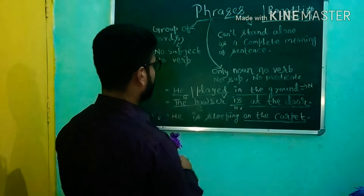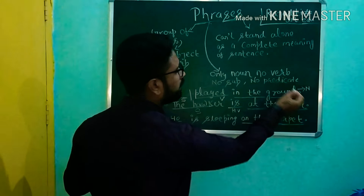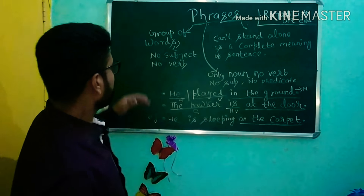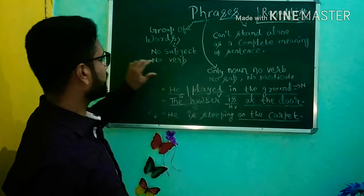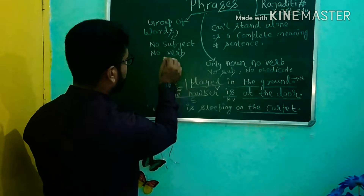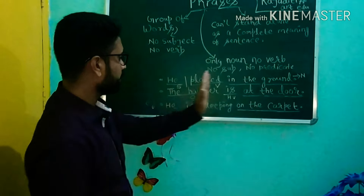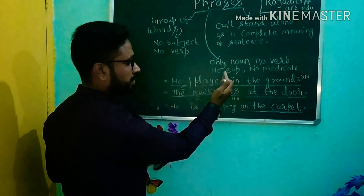Let's clarify by going through some examples about phrases. 'He played in the ground.' Here, 'he' is the subject, 'played' is the verb, and 'in the ground' is the phrase. As discussed earlier, a group of words with no subject and no verb will be a phrase. If we separate 'he' and 'played' from this sentence, 'in the ground' will not have any meaning, so 'in the ground' is the phrase for this sentence.